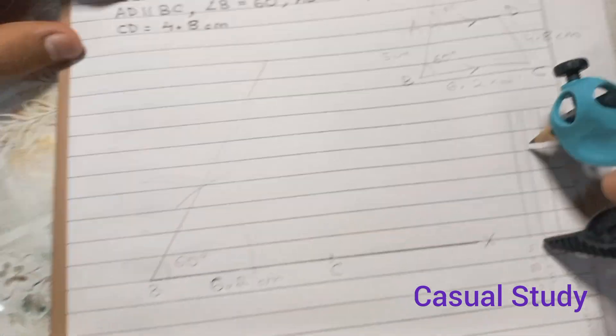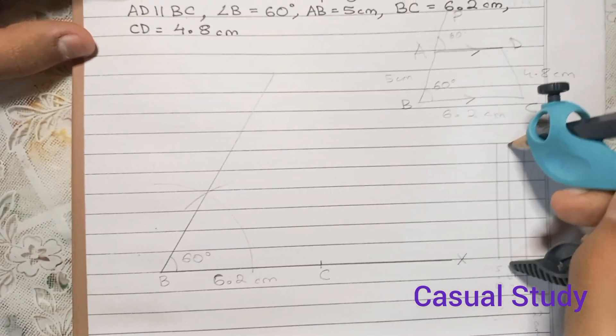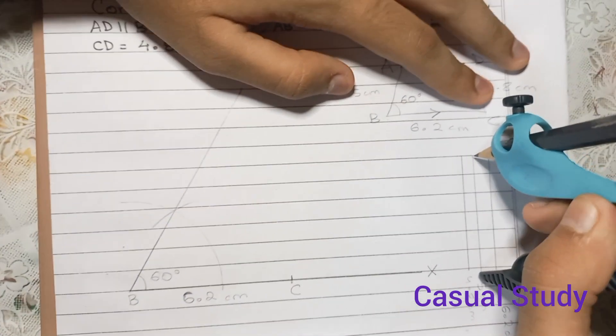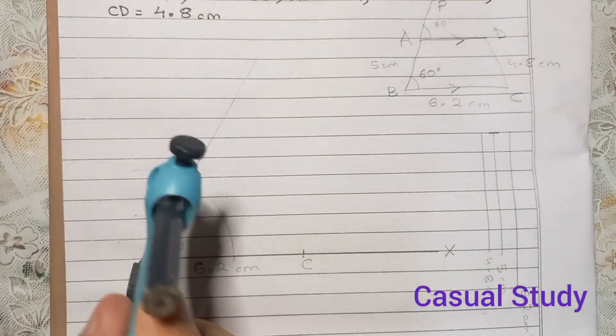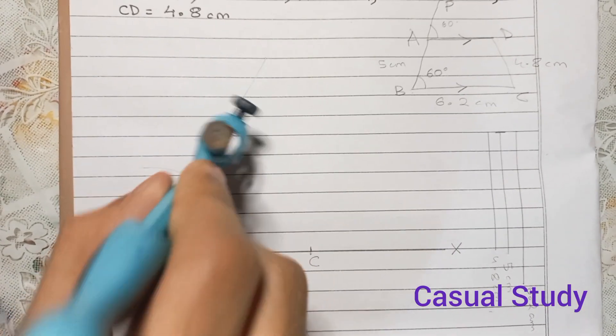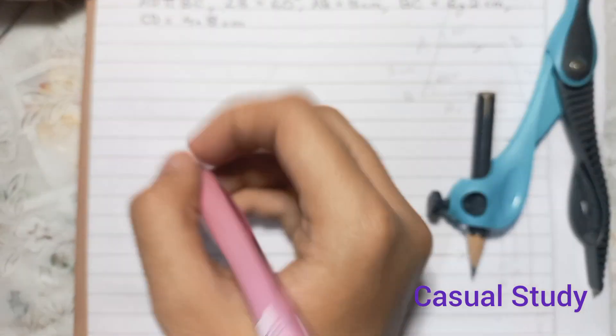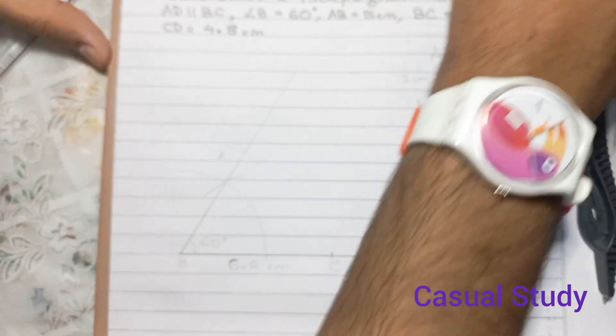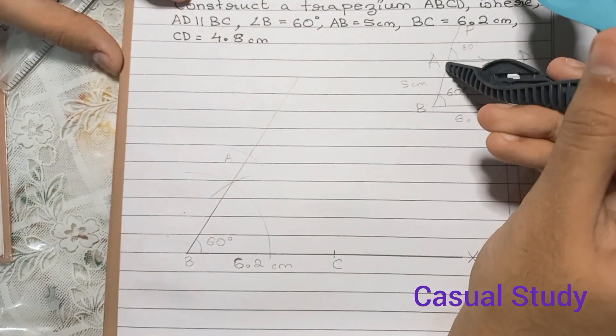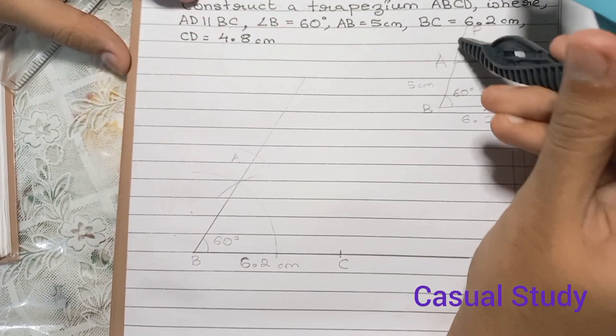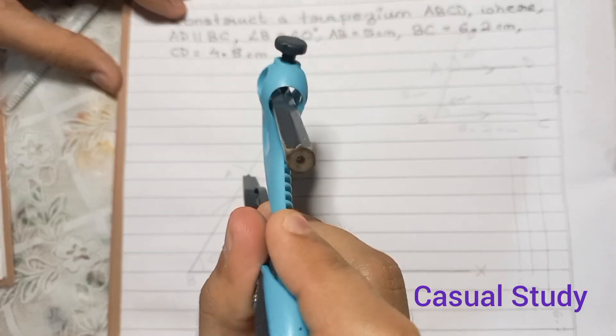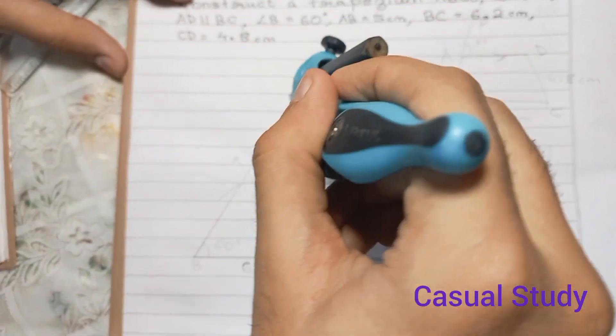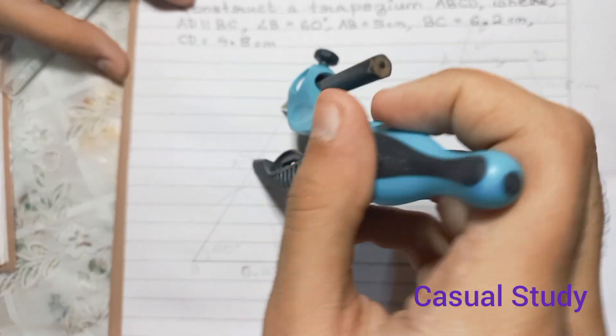We will take our compass and then take the value of 5 cm now. We will keep our pointer at B and cut off 5 cm. This is A. Now we will be constructing another 60 degrees since we have to make these as corresponding angles. To make this parallel line, we will be needing this 60 degrees.